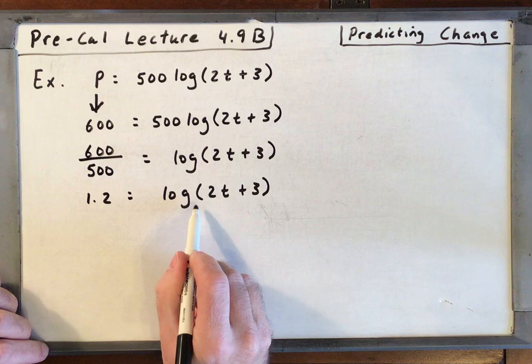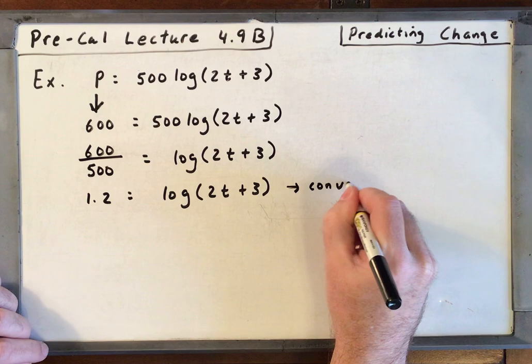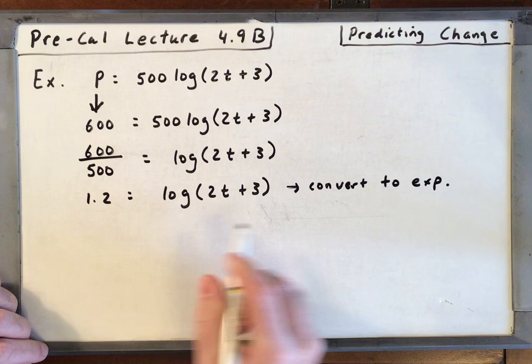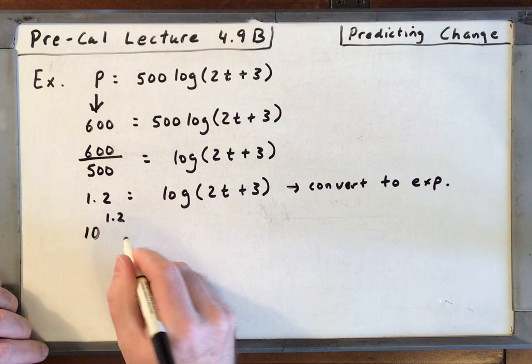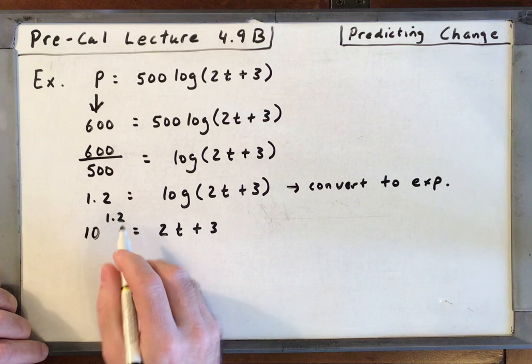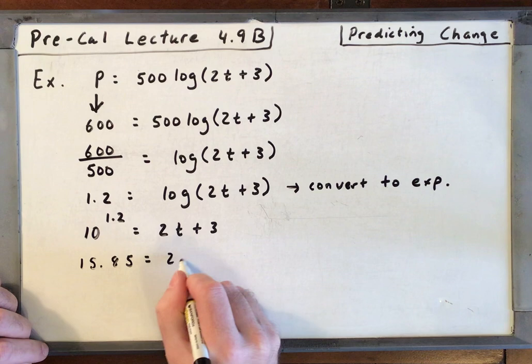So that's log base 10, so let's convert to an exponential equation. So you have 10 to the 1.2, or 10 to the 1.2 is equal to 2t plus 3. 10 to the 1.2, you put that in your calculator, it's 15.85.